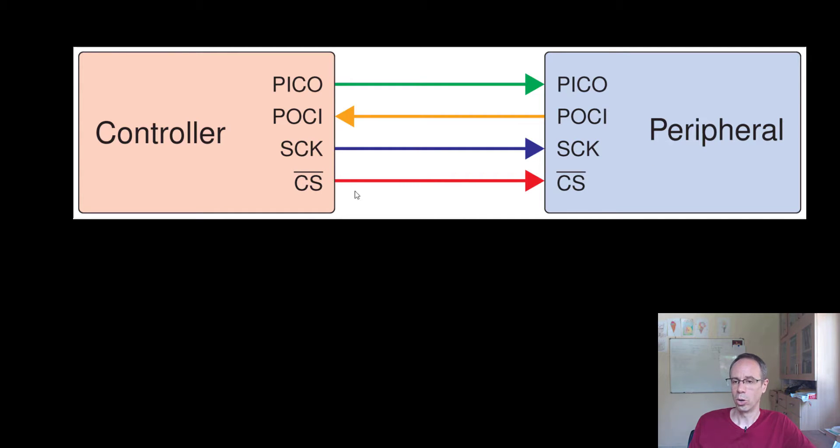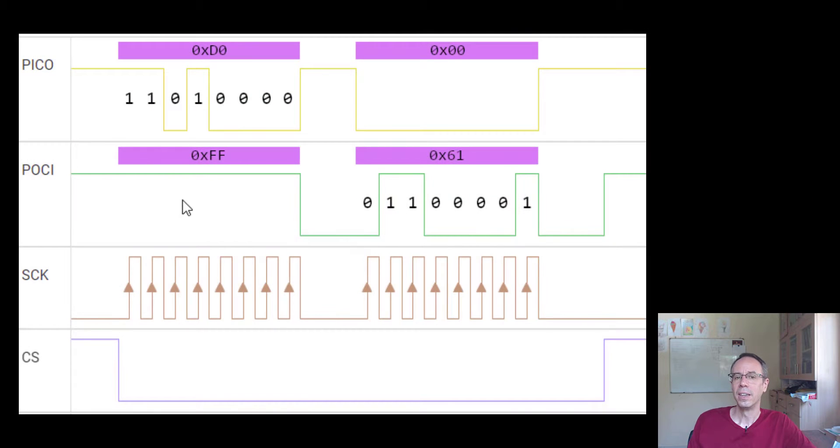When this line goes low then the peripheral on this line is activated. This is a quite simple protocol, so we just transfer serial data mostly one byte. The controller sets the CS line to low, then the peripheral knows the communication with the controller starts. Then on the PICO line the controller sends data, at this time one byte in hex code 0xD0.